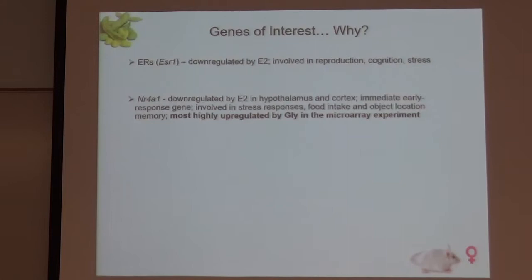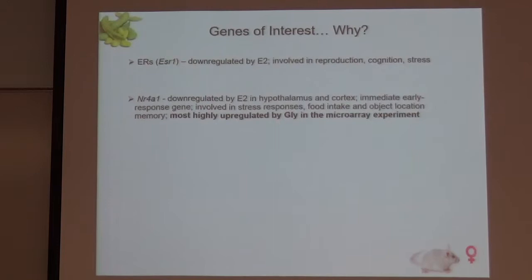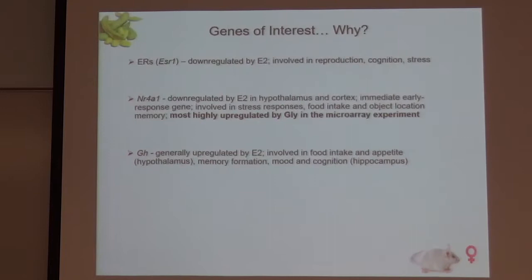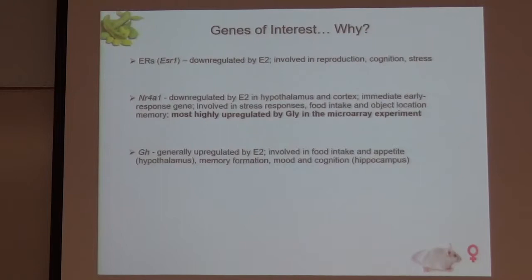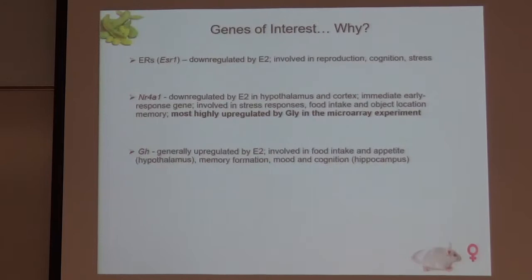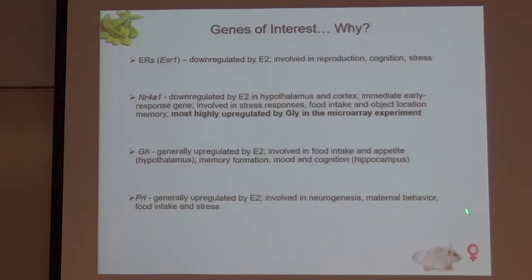NR4A1 was the most highly upregulated gene by glyceolin in the microarray experiment. It is usually downregulated by estrogen in the hypothalamus and cortex, and it is an immediate early response gene — upregulated very rapidly in the brain in response to a stimulus — known to be involved in stress, food intake, and memory. Growth hormone is generally upregulated by estrogen; it is produced locally in the brain in the hippocampus and is involved in food intake, appetite, memory formation, mood, and cognition. Prolactin is also generally upregulated by estrogen and is involved in neurogenesis, maternal behavior, food intake, and stress.